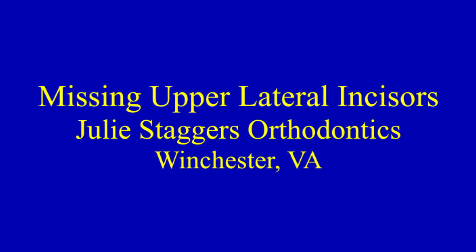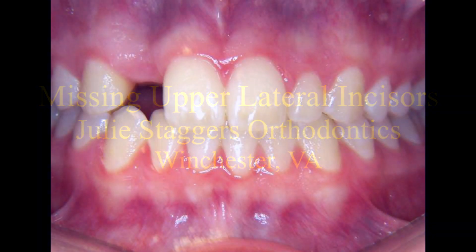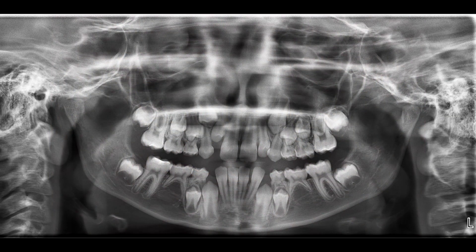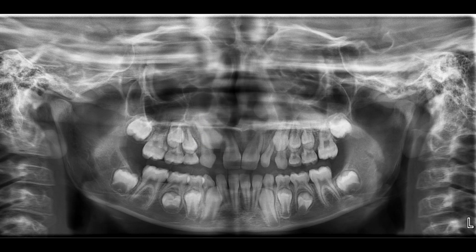Missing upper lateral incisors is a common orthodontic problem. The upper lateral incisors are one tooth over from the dental midline. Normally the lateral incisors are up around age seven. If your child is older than age seven, it is a good idea to visit an orthodontist to check on your child's teeth. The lateral incisors may be just slow at erupting, or they may be missing.